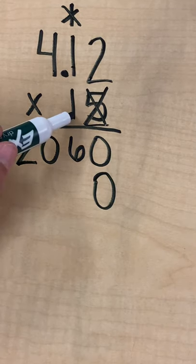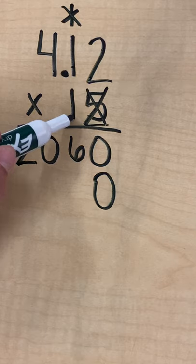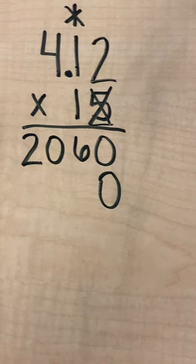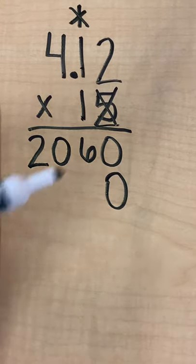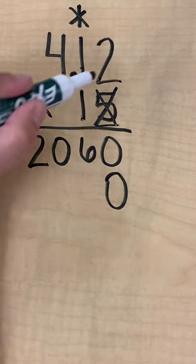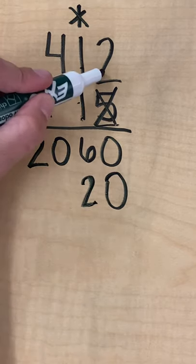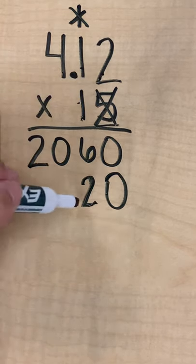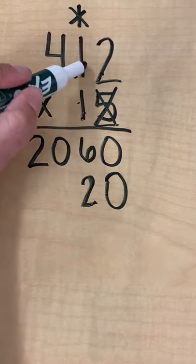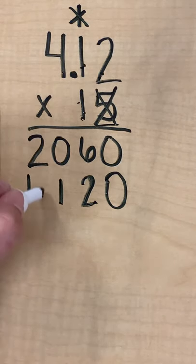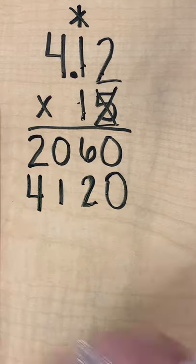Because the next place, I'm not just multiplying times 1, I'm multiplying it times 10. I'm just writing my zero down here so I don't have to worry about it again. All right, so now I can just multiply 1 times 2, I have 2. If I had done 10 times 2, I would have 20, so there's my 20. 1 times 1, I'm going to have 1. 1 times 4, I'm going to write my 4.